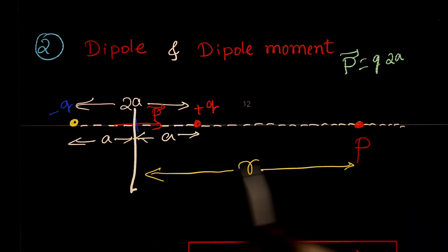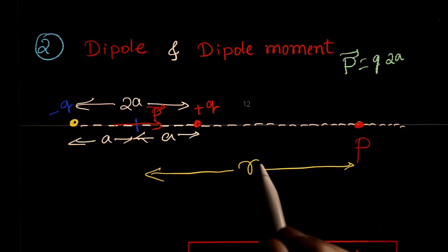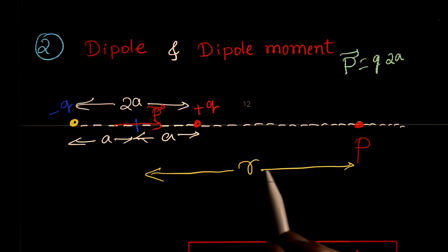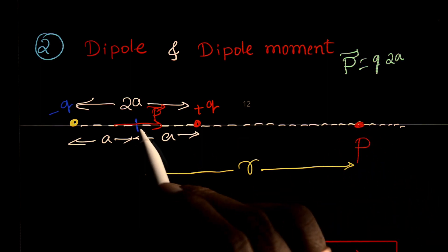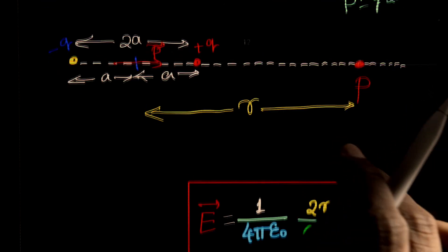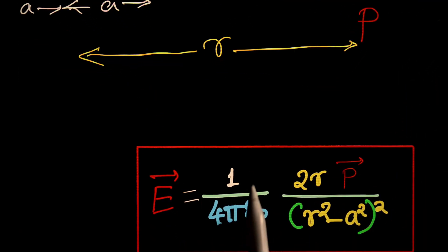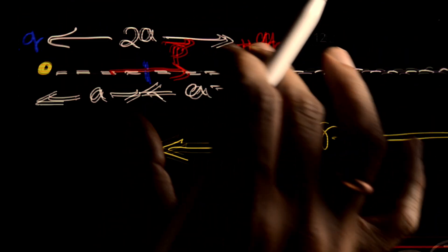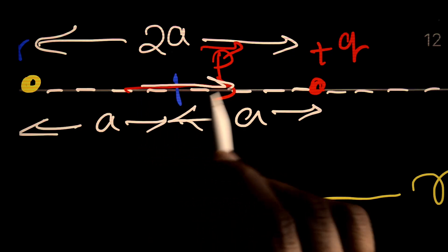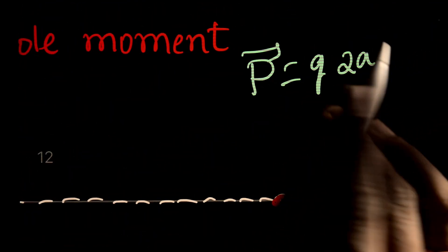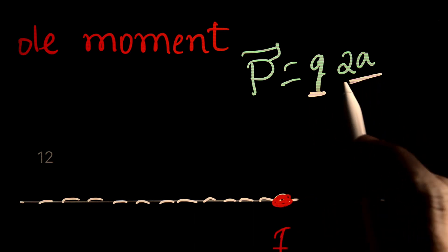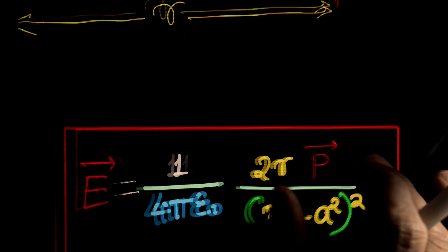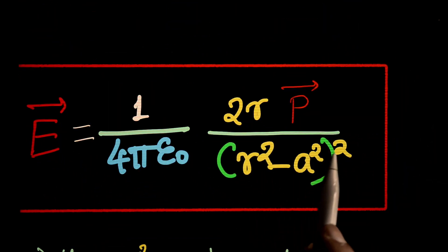At the midpoint of the dipole, the point P is at a distance r from the center of the dipole. We are going to derive the expression: E = (1/4πε₀) × 2r·P̂, where vector p is the dipole moment — the product of either charge and the distance 2a between the two charges — divided by (r² − a²)².